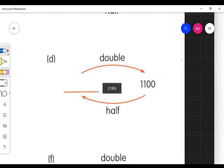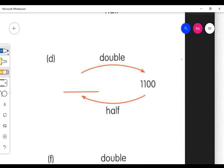And then part D says to double this number, we will get 1,100. Or if we divide this by 2, we would get 550.